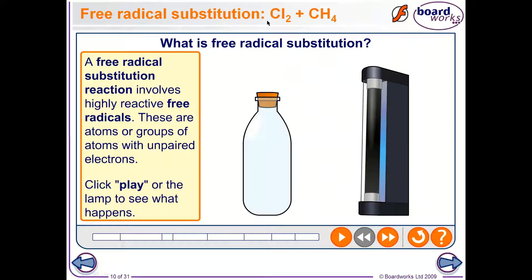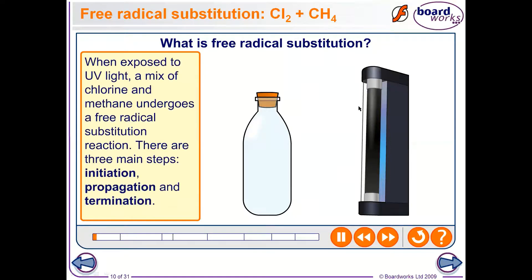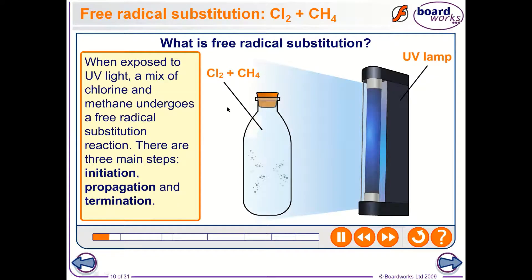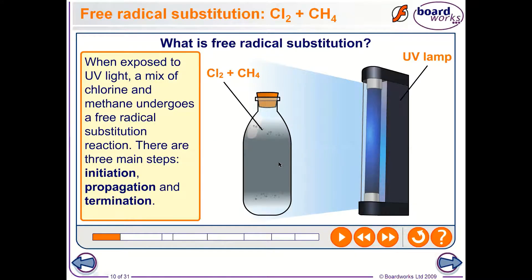Free radical substitution is one of the most important questions from this topic. Free radicals are atoms or groups of atoms with unpaired electrons. In this reaction, we have a mixture of chlorine gas and methane gas, and when UV light is shown on the reaction mixture, it undergoes free radical substitution. There are three main steps: initiation, propagation, and termination.